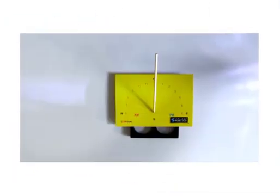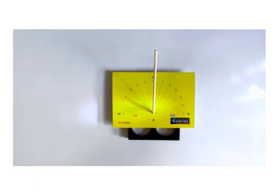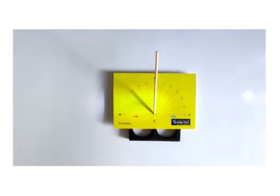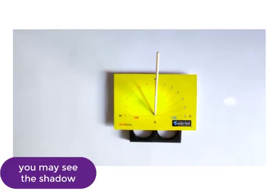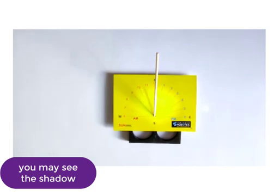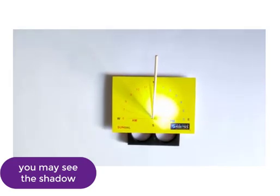You may check the instrument in a room too. Place the setup with the pointer facing the northern side. Take a torch, assume it to be sun, and place it right on the pointer.